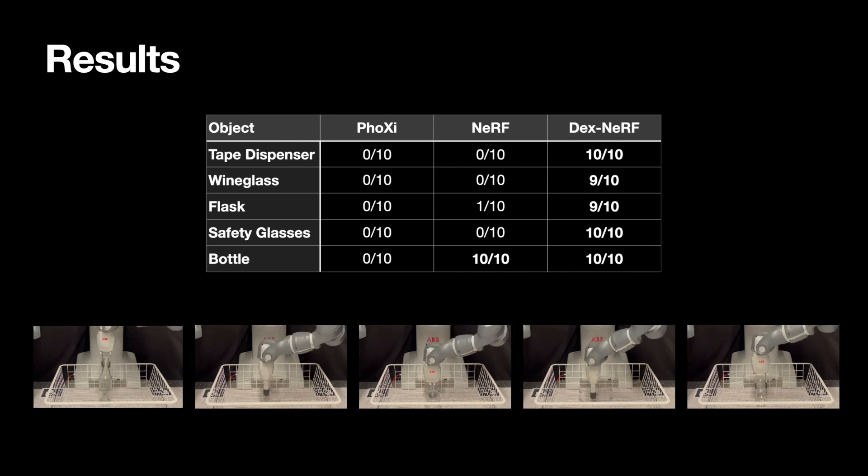Achieving 90% and 100% success rates for all objects, while the baselines get few successful grasps, if any. We also test DEXNERF on a cluttered scene.